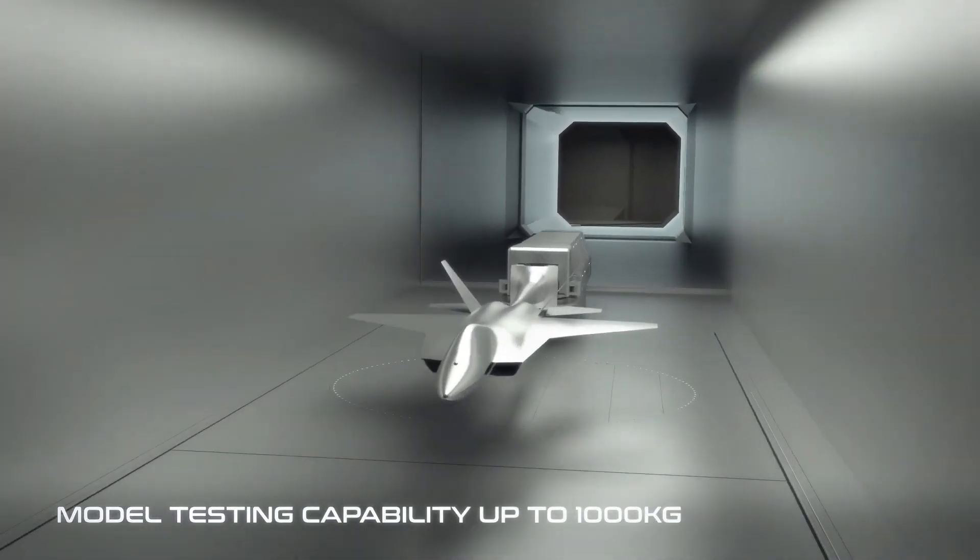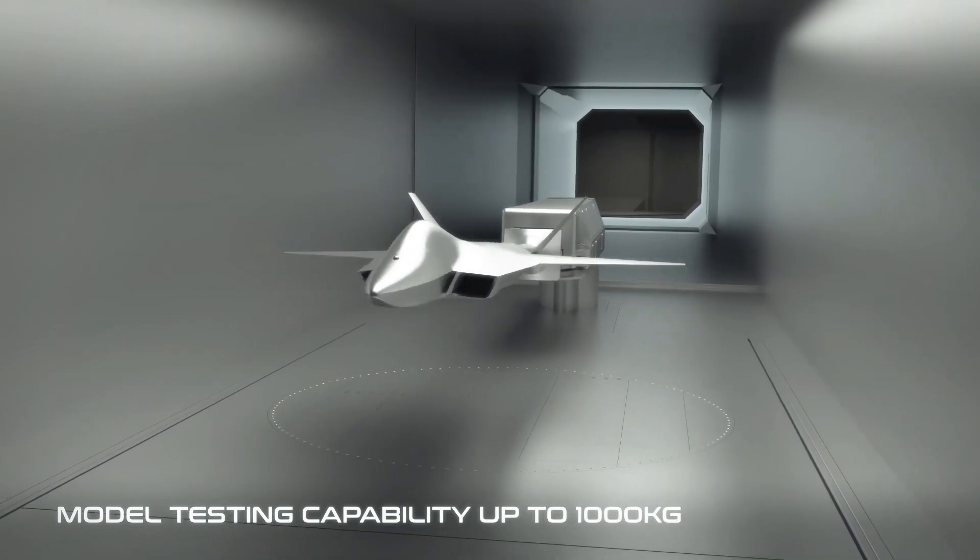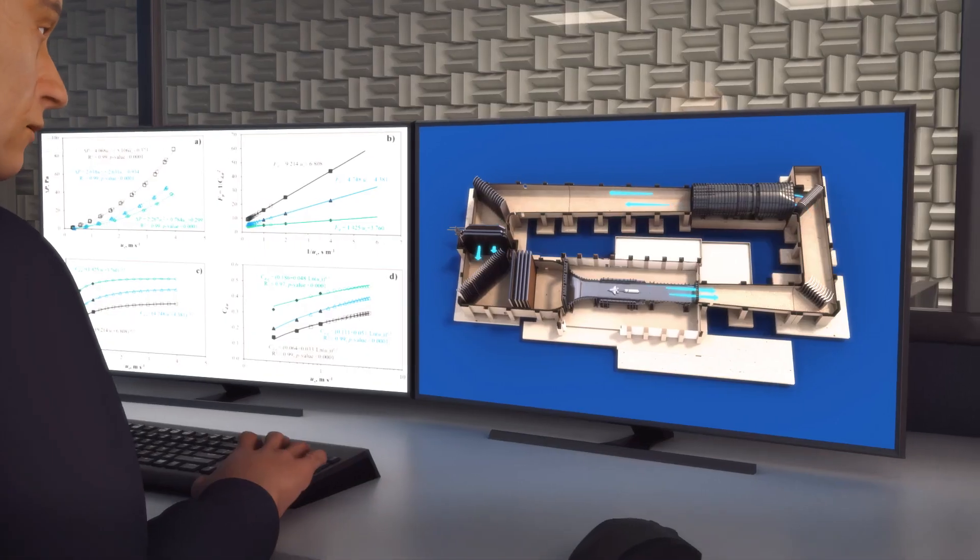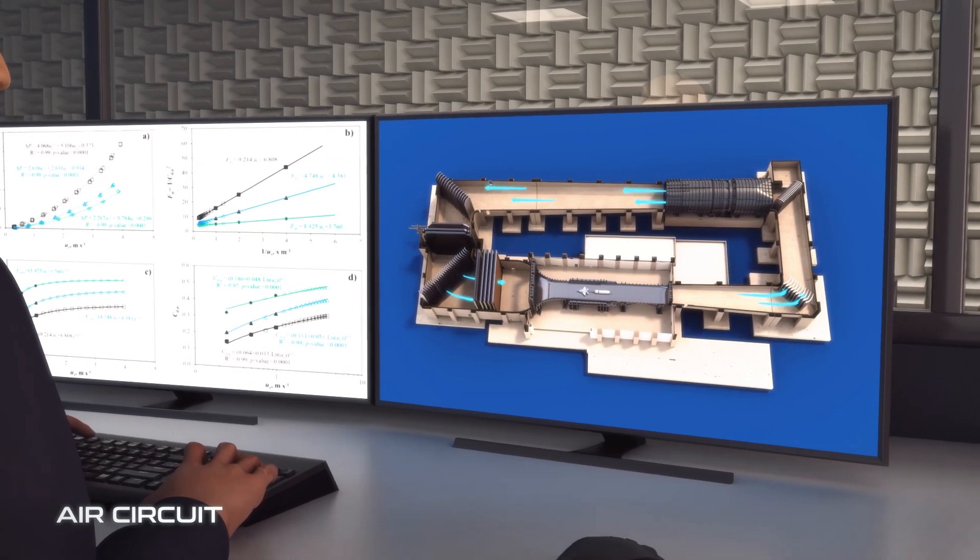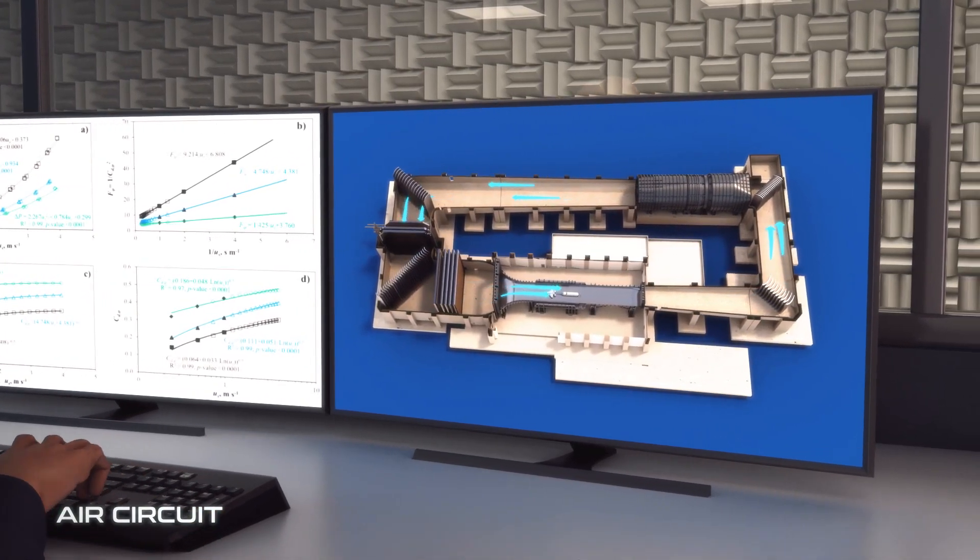A moving ground belt system is a part of this facility which makes landing and take-off tests of aircraft and automotive tests possible to be performed in Turkey.